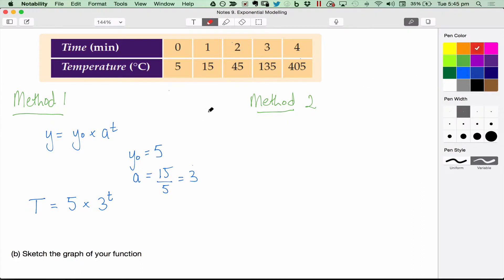Method two, is slightly different, uses a slightly different equation. You might have seen this one on your Maths is Cool worksheet. a times b to the t. It looks similar, it's just got an a here instead, and a b.